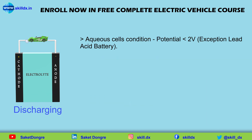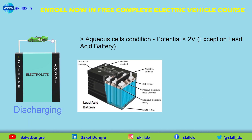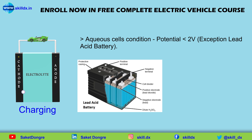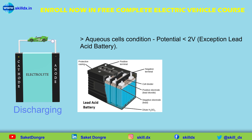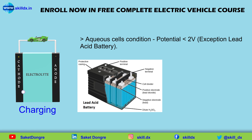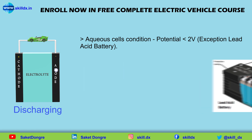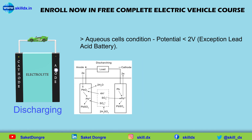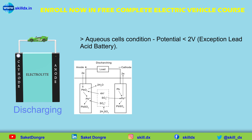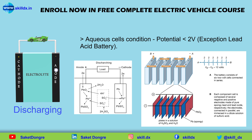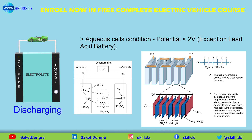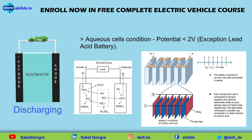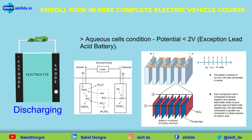So any battery cell having a voltage higher than 2 volts cannot use water as its solvent. A slight exception is the lead-acid battery cell, which often has a voltage a little over 2 volts per cell. When sulfuric acid is dissolved in the water, it slightly elevates the voltage at which water breaks down into hydrogen and oxygen, making a 2-volt battery cell possible. But it's not possible to get much above 2 volts, so an aqueous solution in a lead-acid battery actually works.